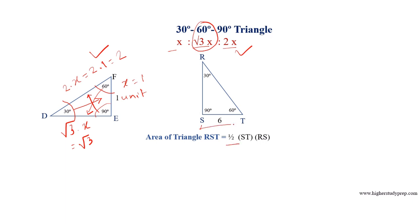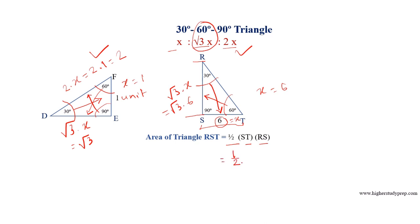For the area of triangle RST: area equals half multiplied by base ST multiplied by height RS. The base ST equals 6 units, which is the side opposite the 30-degree angle R. Since the side opposite 60 degrees equals √3 times X and X equals 6, the height RS equals √3 multiplied by 6. Therefore, area equals half multiplied by 6 multiplied by 6√3, which equals 18√3 centimeters squared.